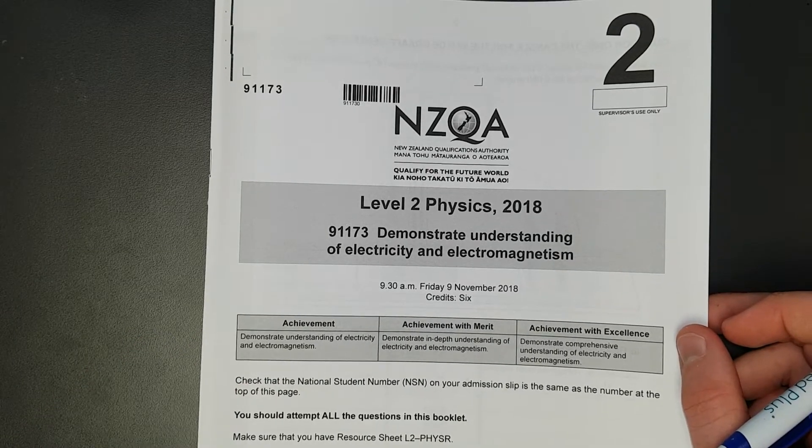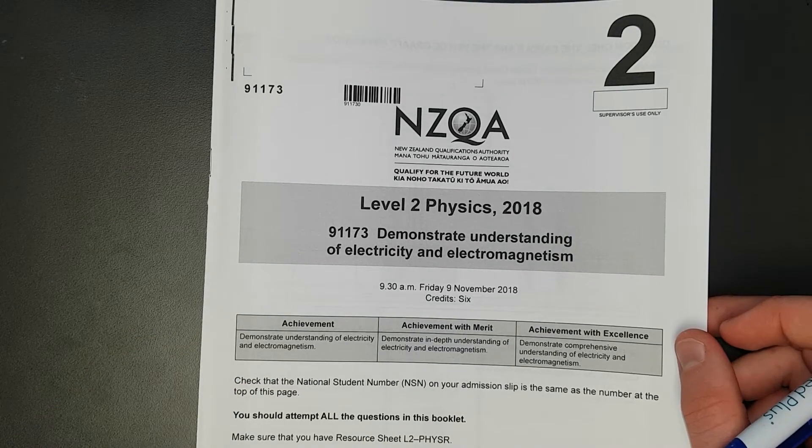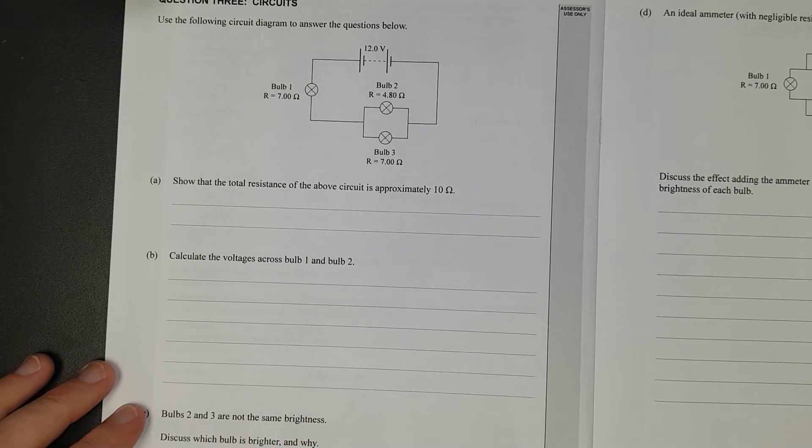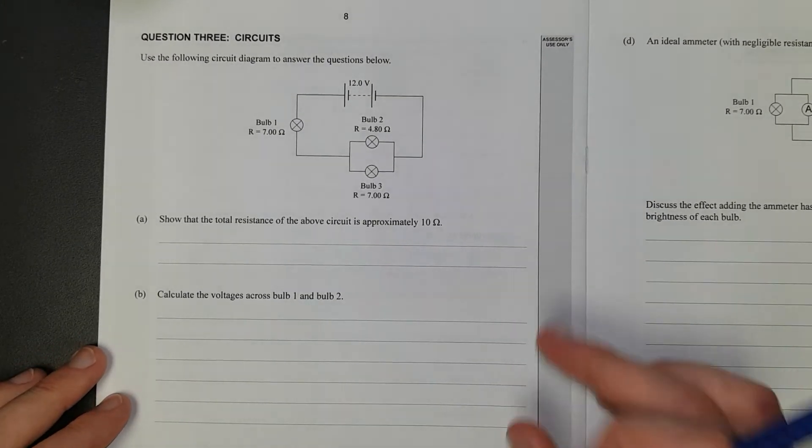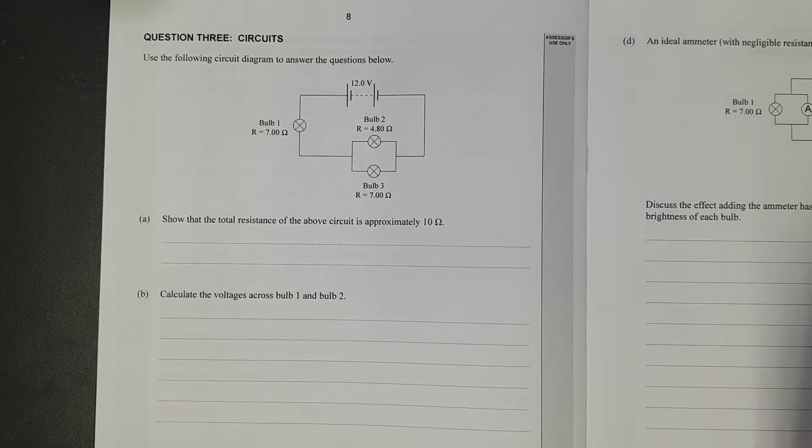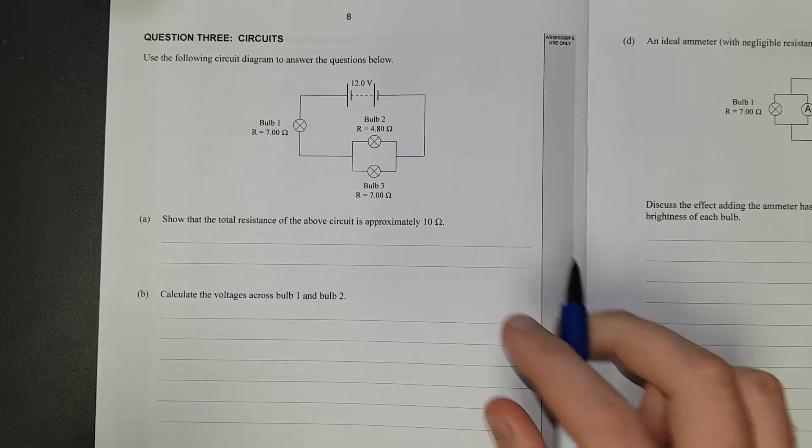This video I'll be working through question 3 of the 2018 level 2 electricity exam. Question 3: Use the following circuit diagram to answer the questions below. Show the total resistance of the circuit above is approximately 10 ohms.